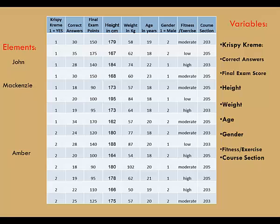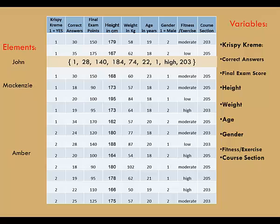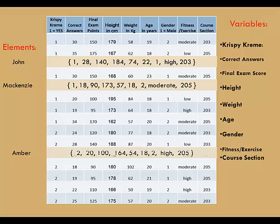Let's look at some examples of observations. Recall that an observation is a set of values of the variables for a given element. The observation for John is the set: 1, 28, 140, 184, 74, 22, 1, high, and 203. Here's an observation for McKenzie, and another for Amber.